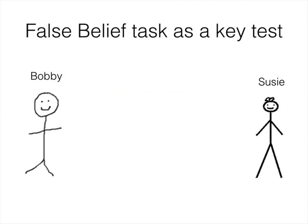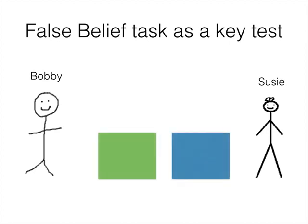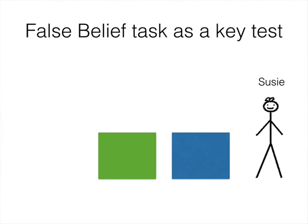One classic task is the false belief test. In this game, children meet two characters, Bobby and Susie. Bobby has a green box and Susie has a blue box. Then Bobby takes one of his toys and puts it inside of the green box, before leaving the room to go for a walk. Susie then takes the toy and moves it from the green box to the blue box.